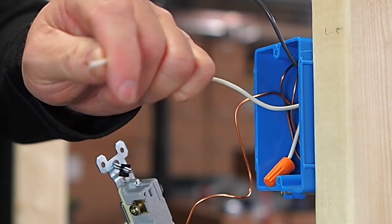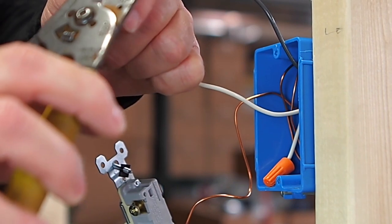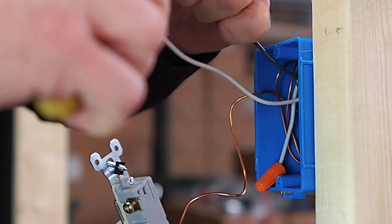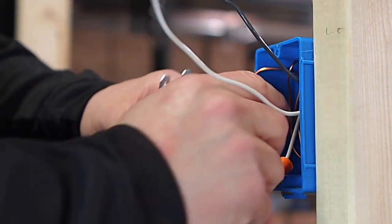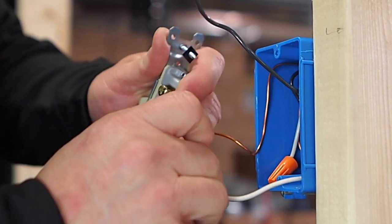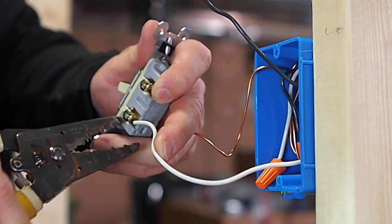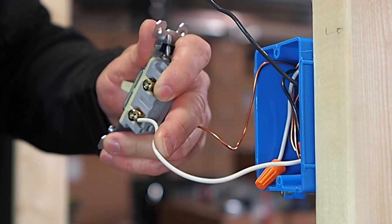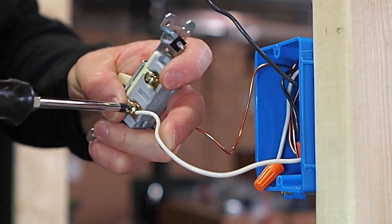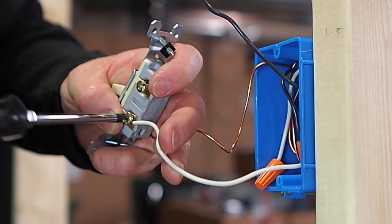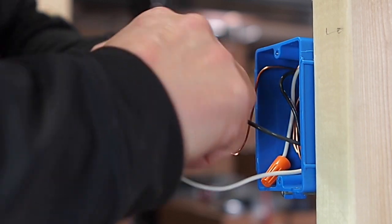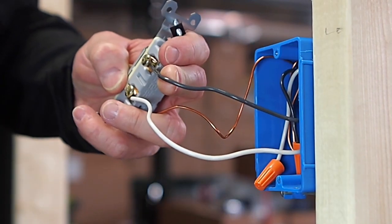Now we are going to strip this white one and put it around a terminal here. And use the black one again. So it doesn't matter which terminal you put these on. So there is the white one and the black one we are going to put on there.